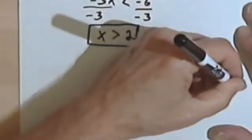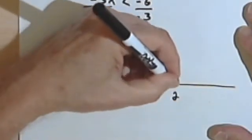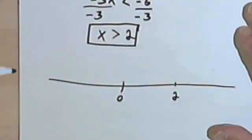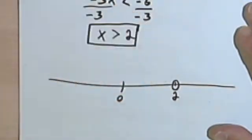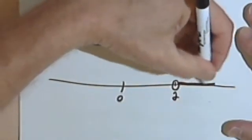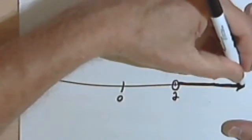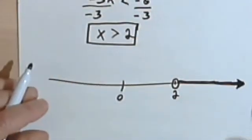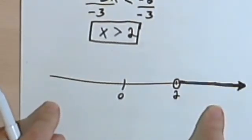I'm showing this on the number line. Here's my 0. Let's say this is where the 2 is. x is not going to equal 2, so I'll put an open circle. x is greater than 2, so I want to darken the line everywhere where I've got a number bigger than 2, and I'll put my arrow in. This is the way I'll display the answer on the number line.